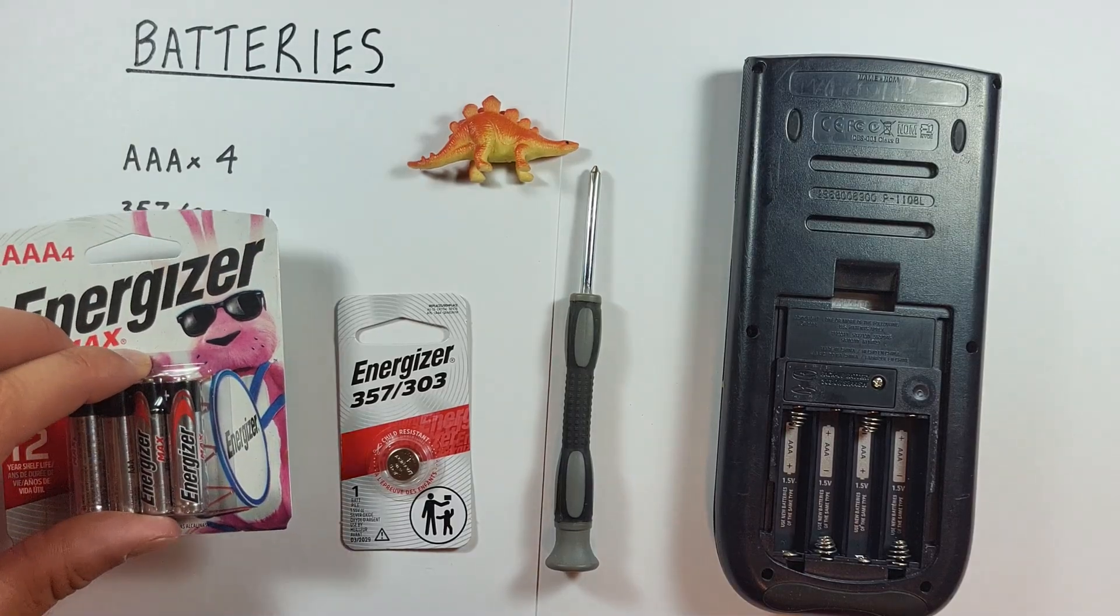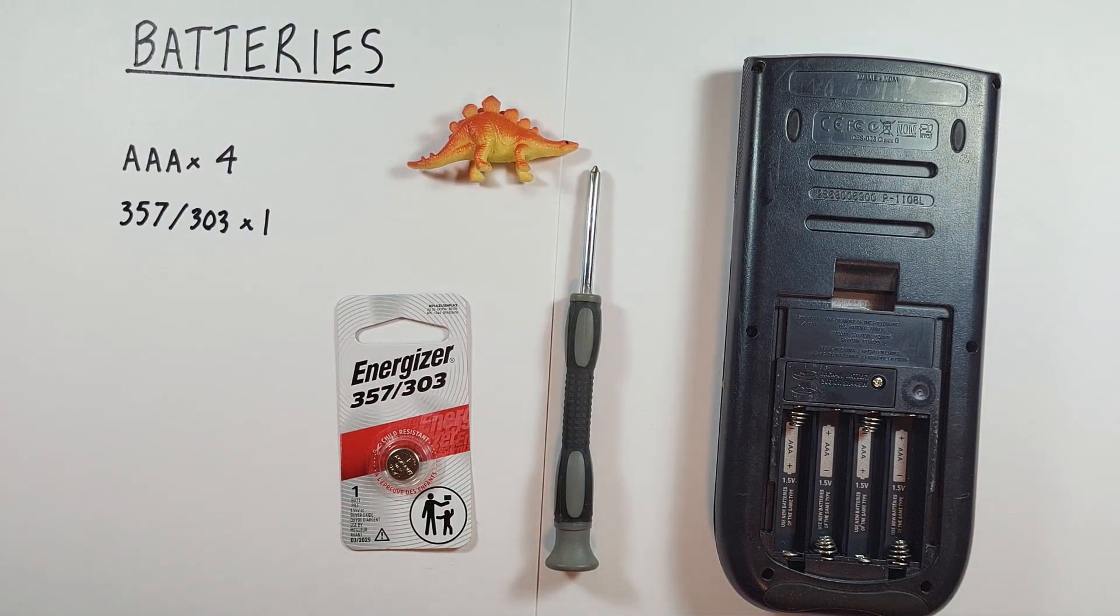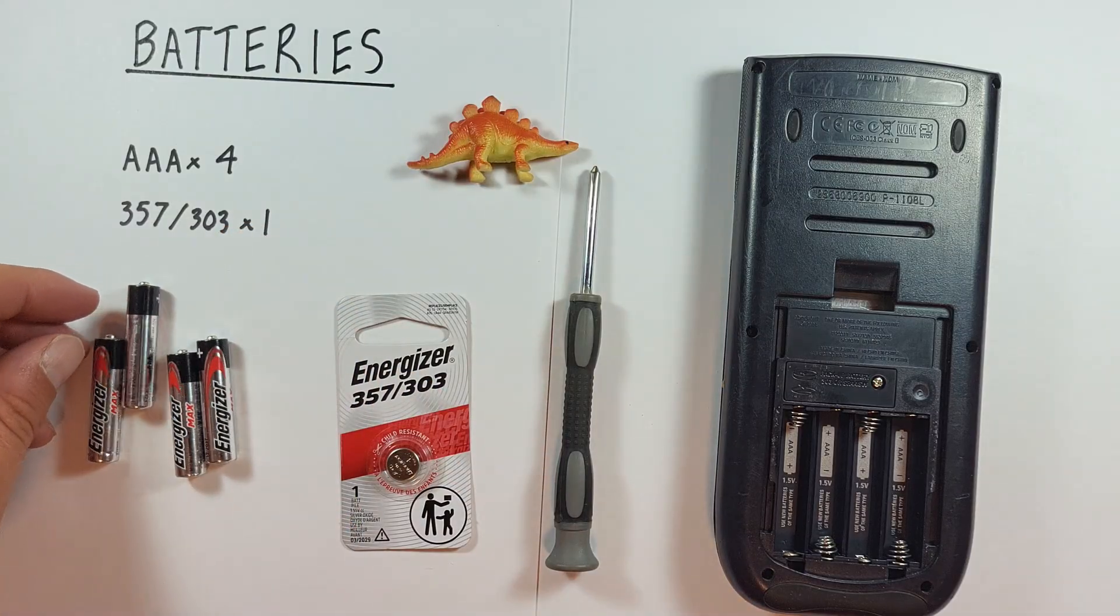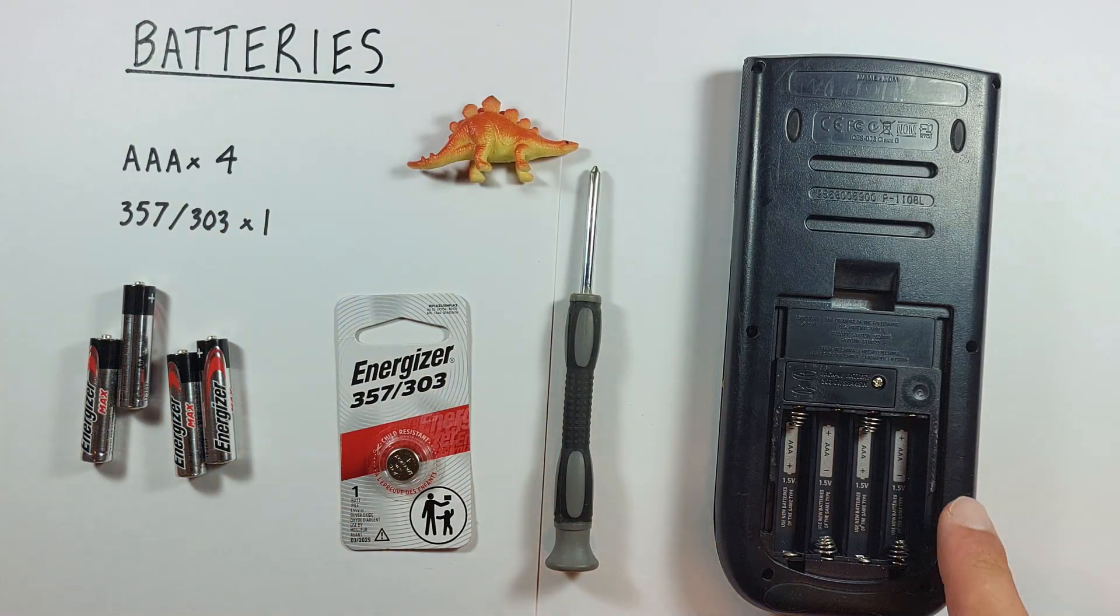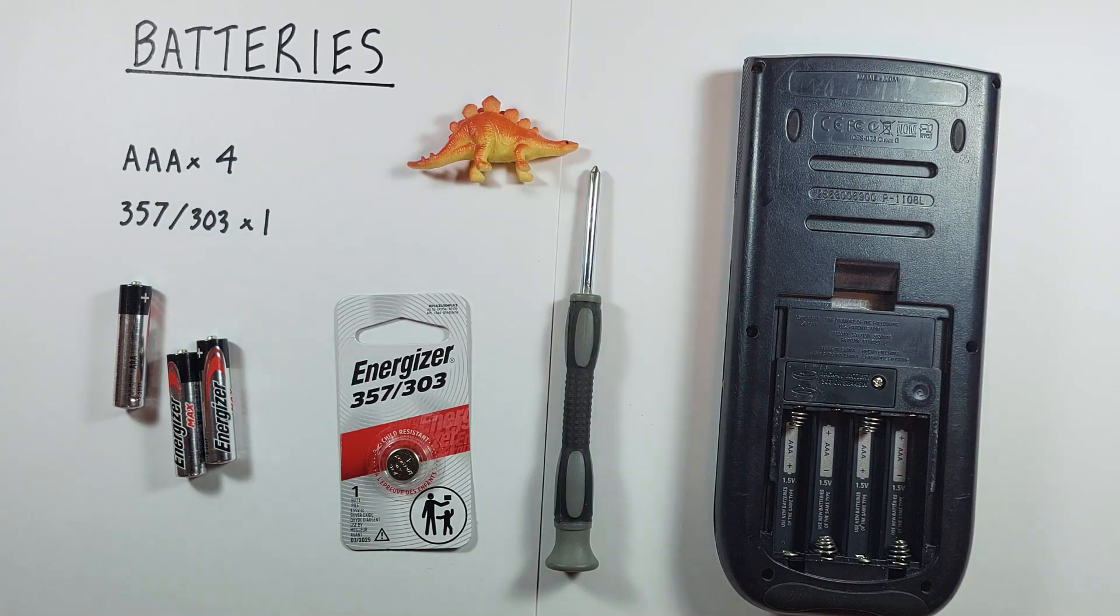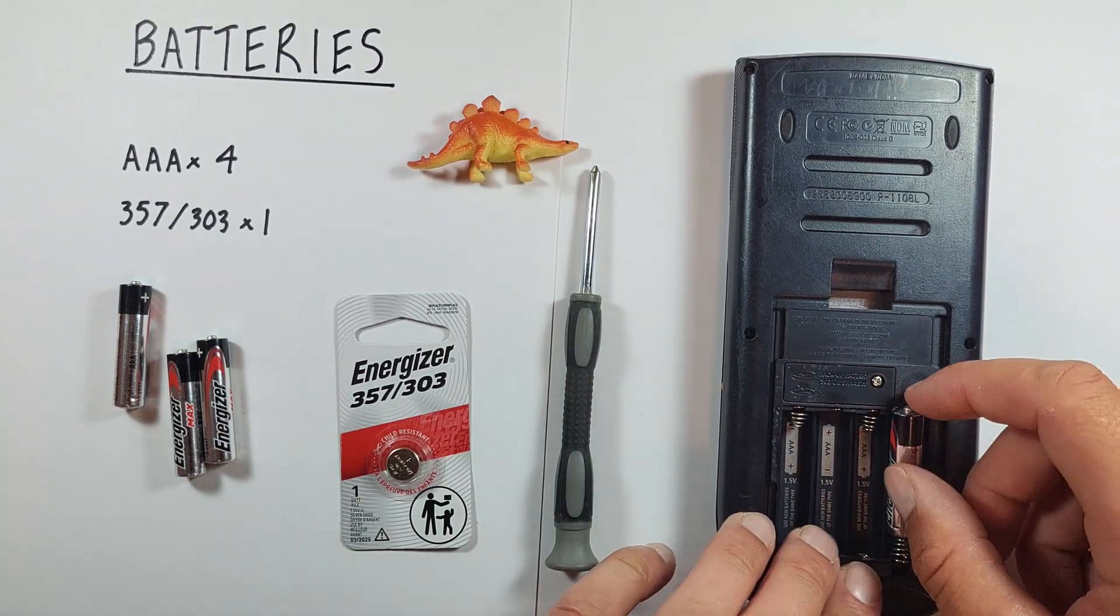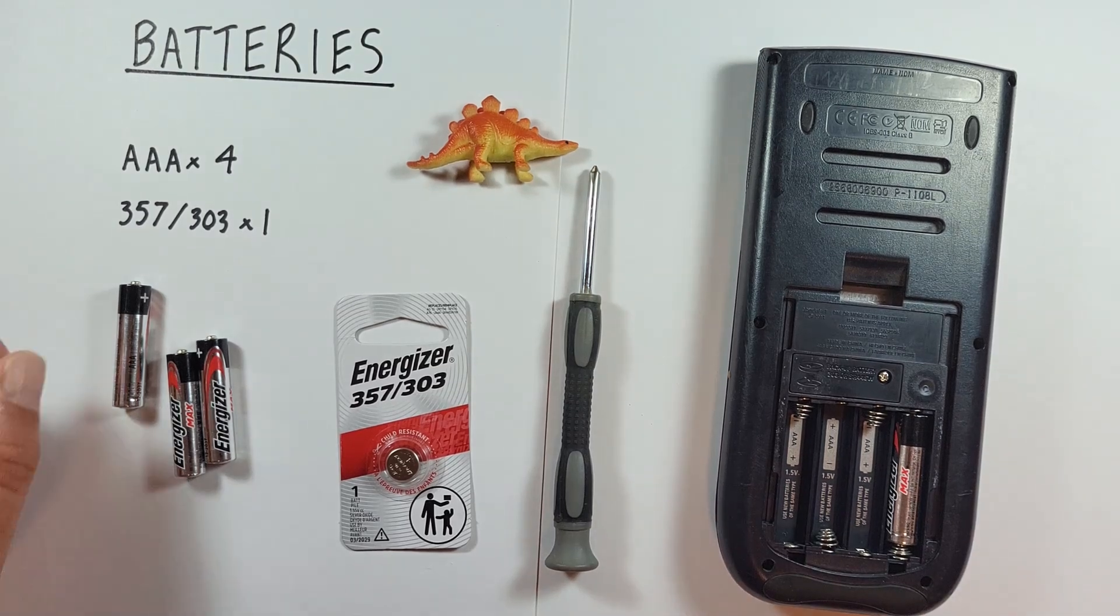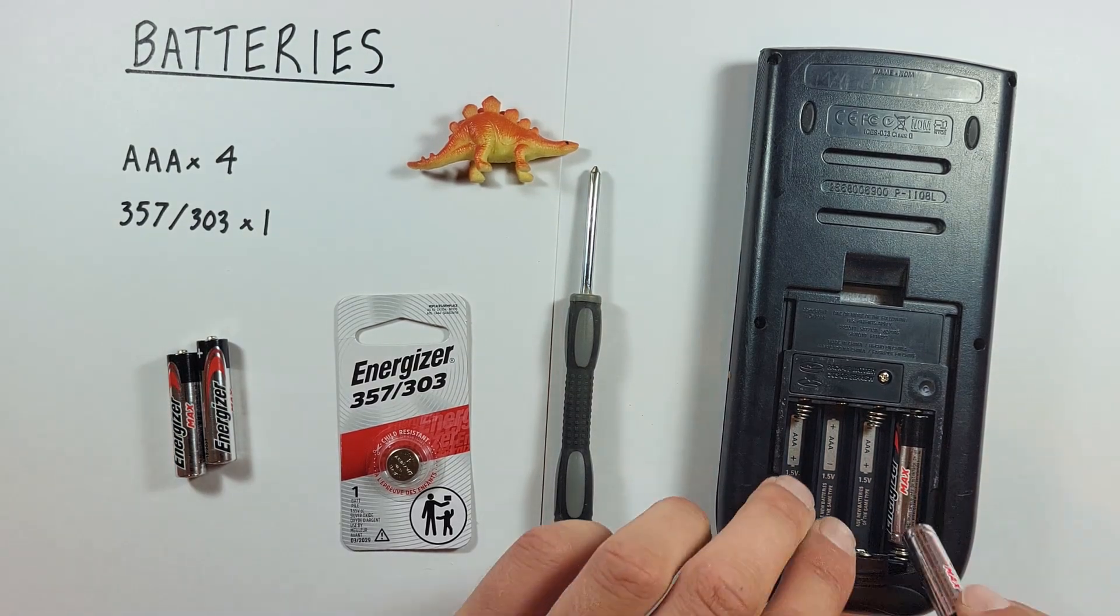Then we take our new batteries and insert them according to the positive negative diagram on the calculator. So negative to the spring, positive into the flat spot and alternate that as we go.